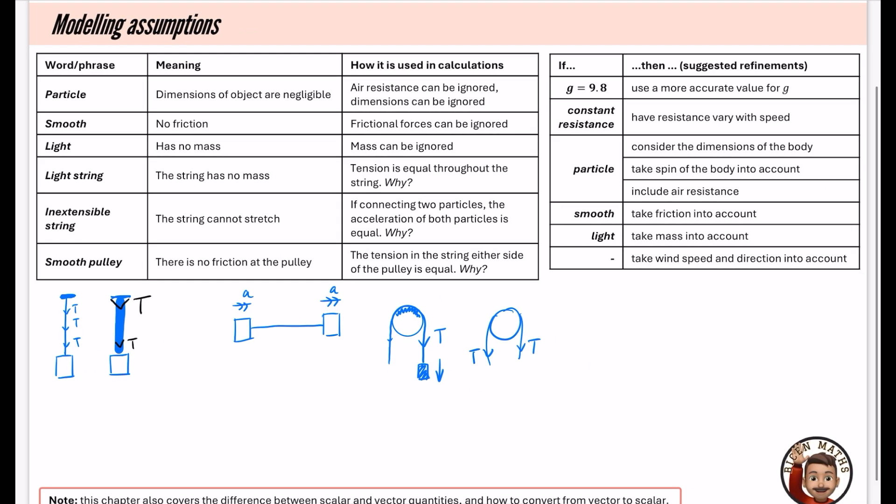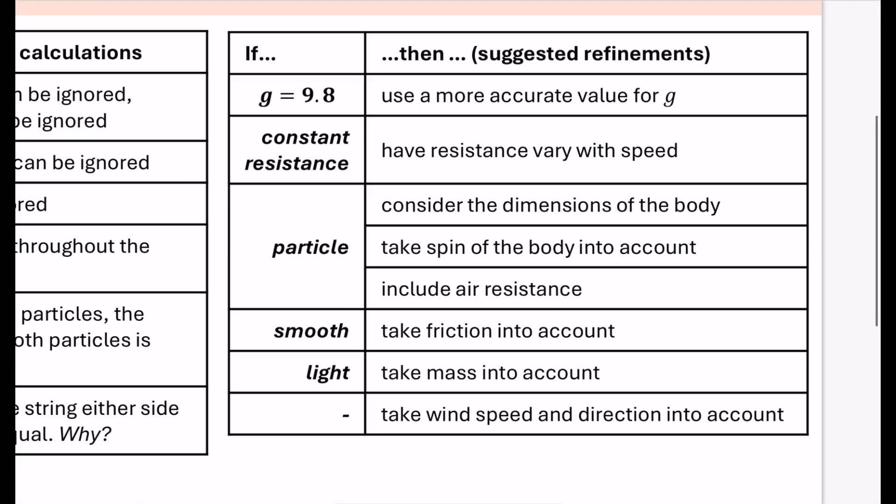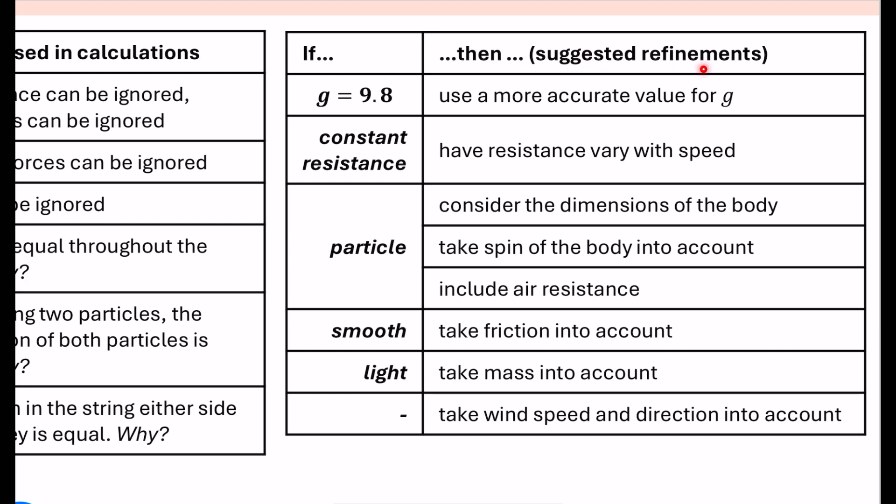Okay. And then the last thing I wanted to talk to you about is some modeling assumptions where they ask you to kind of criticize the model or to suggest a refinement to the model. So if in the question they have said that G is used as 9.8, maybe they've even used it as 10, then a good criticism is to say that you could use a more accurate value for G. This has been rounded to two significant figures. I think it's 9.81 and it just goes on and on. If the question says that the particle or the body is experiencing constant resistance, well, it might be better to say that the resistance is varying with speed. That's actually how it works in real life. So if you ever see constant resistance, you can criticize that and say that it shouldn't be constant. It should vary with speed.